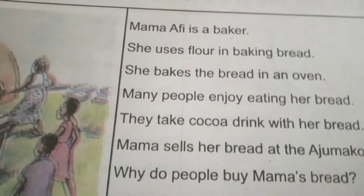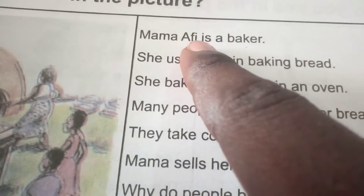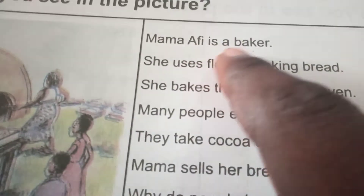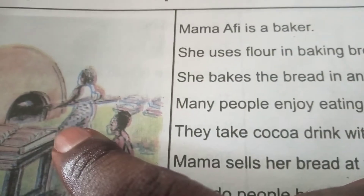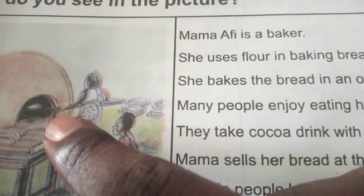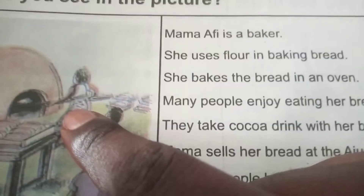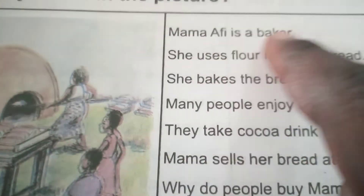Now let's come to the passage. Mama Afi is a baker. The baker's name is Mama Afi. The woman who is going to bake the bread is the baker, and her name is Mama Afi.